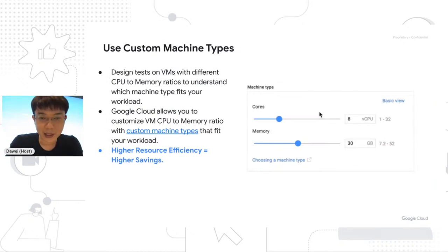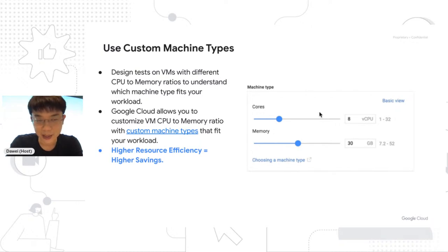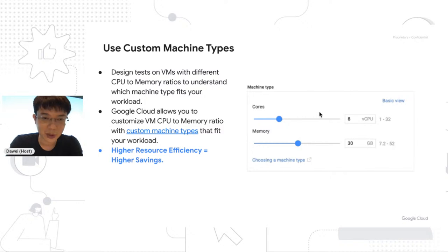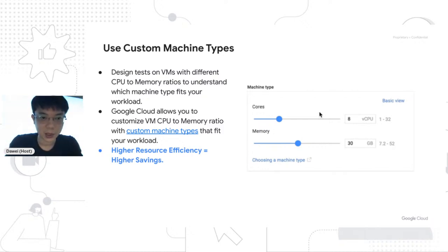Google Cloud also provides custom machine types on top of predefined machine types. With custom machine types, you can specify and customize the CPU cores to memory ratio. Depending on the nature of your workload, you may have a specific CPU-to-memory ratio that's better suited. If you can maximize resource usage efficiency with a custom machine type, you'll achieve higher savings because you'll likely need fewer instances.